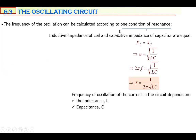The frequency of the oscillation can be calculated from the resonance condition XL equals XC. From this: omega squared equals 1 over LC, so omega equals 1 over the square root of LC. Since omega equals 2πf, the frequency of oscillation is f = 1 over (2π times the square root of LC). Greater C or greater L means lower frequency of oscillation.